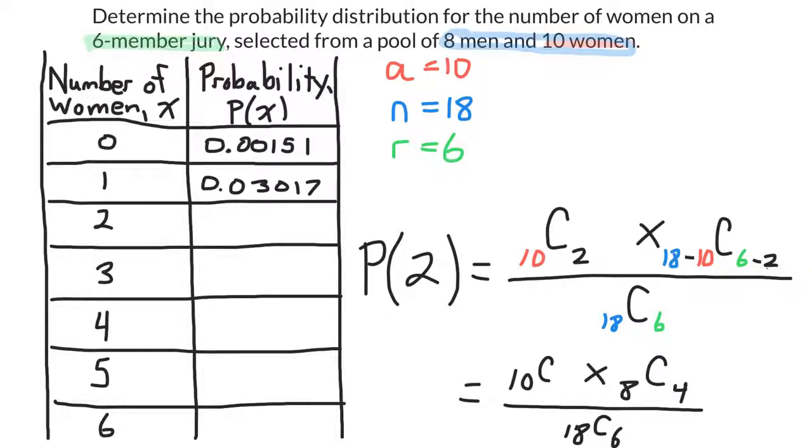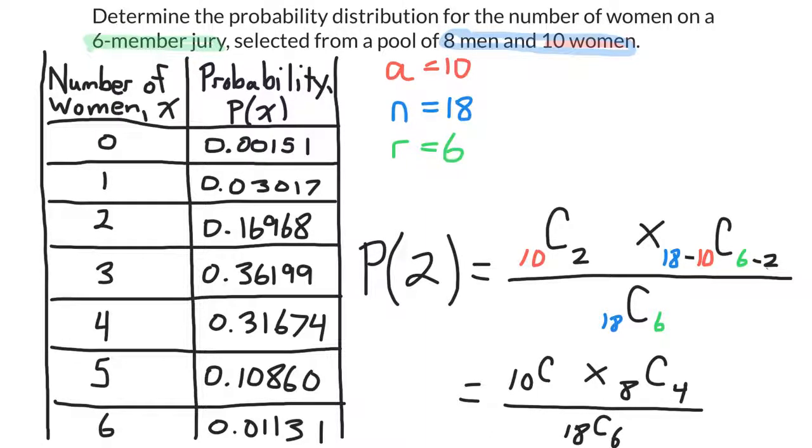I can do it again for the probability that two women are selected. And I can keep doing that all the way to six women. I'll just save some time and show you the final result.